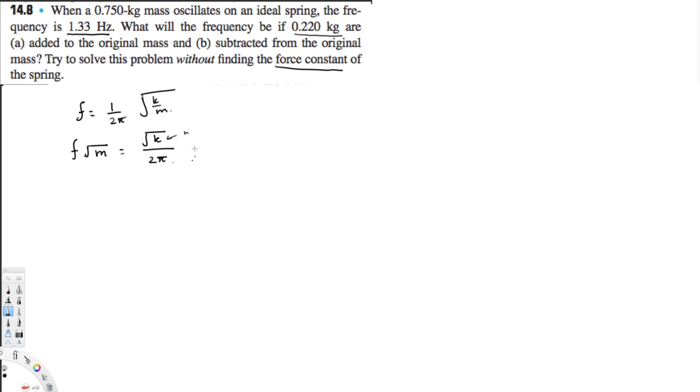Therefore we can say f₁ times square root of m₁ is going to be equal to f₂ times square root of m₂, because the constant over 2π is going to be the same for both of them. From this information we can find this.